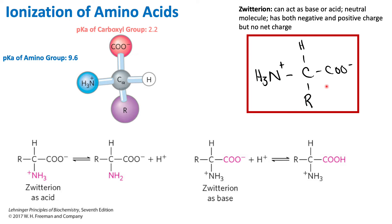Looking at this zwitterion, it is a general amino acid with an R group, carboxyl group, amino group, and hydrogen. At a pH of 7, the carboxyl group does not have a hydrogen but the amino group has an extra hydrogen — the amino group is protonated and the carboxyl group is deprotonated. The zwitterion can act as an acid by donating a proton: the amino group donates its extra proton, leaving NH2 and releasing H+.